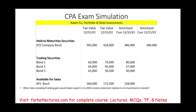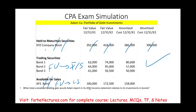Let's look at the third question: What total unrealized holding gain would Adam report in the X2 income statement relative to its investment in bonds? For held-to-maturity, those are reported at amortized cost and none of it goes on the income statement. For trading securities, they're reported at fair value and that fair value change goes to the income statement. For available-for-sale, the fair value goes to comprehensive income — a balance sheet account — so we don't need to include it here. All we need to figure out is how much the trading securities affected the income statement.